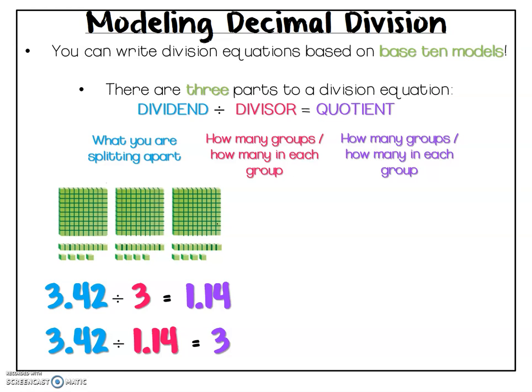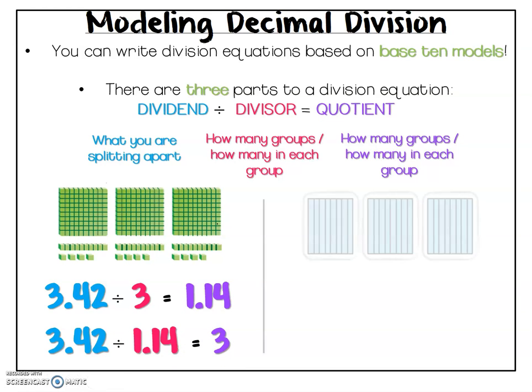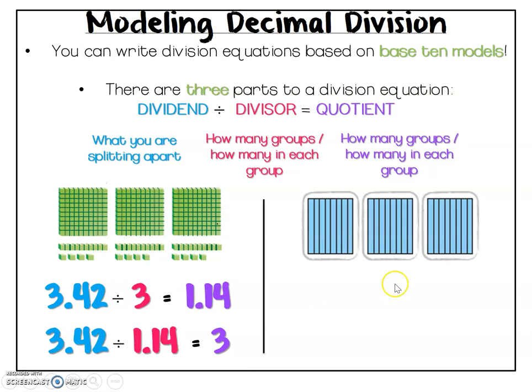That's dividing a decimal by a whole number, or a decimal by a decimal, giving us a whole number quotient. Let's take a look at one more. This time, I see tenths grouped together, and I can clearly see that I have three groups.